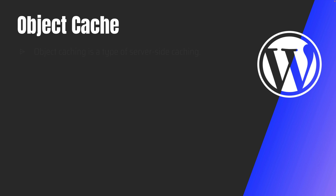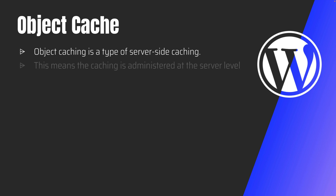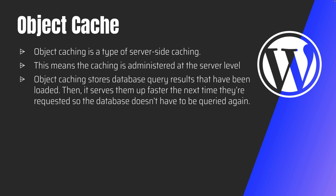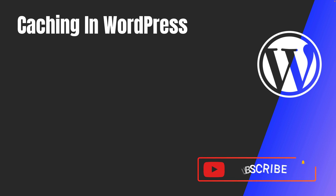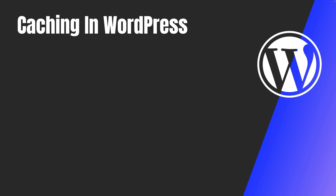Now that we understand why we need object caching, let's discuss it a bit further. As I explained in previous videos, object caching is a type of server-side caching. Unlike browser caching and page caching, caching is administered at the server level. Object caching stores database query results that have been loaded and serves them faster the next time they are requested. In the next video, we're going to talk about how caching works in WordPress in detail. See you in the next video — thank you very much, bye.